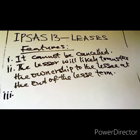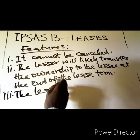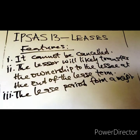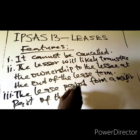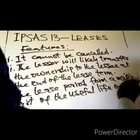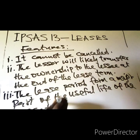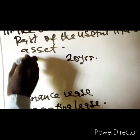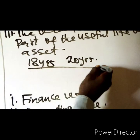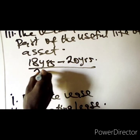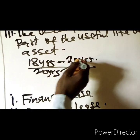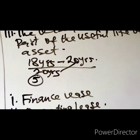Number three: the lease period forms a major part of the asset's useful life. For example, the useful life of the asset may be twenty years and the lease period forms a major part of it. But where the useful life is twenty years and the lease period is only five years, that is not a finance lease.